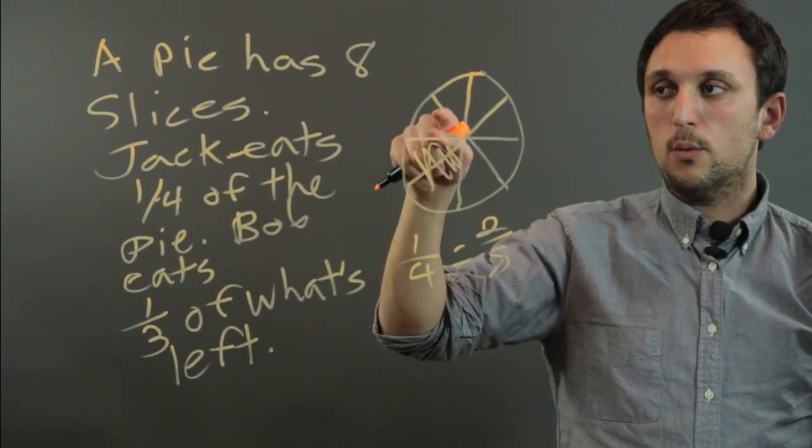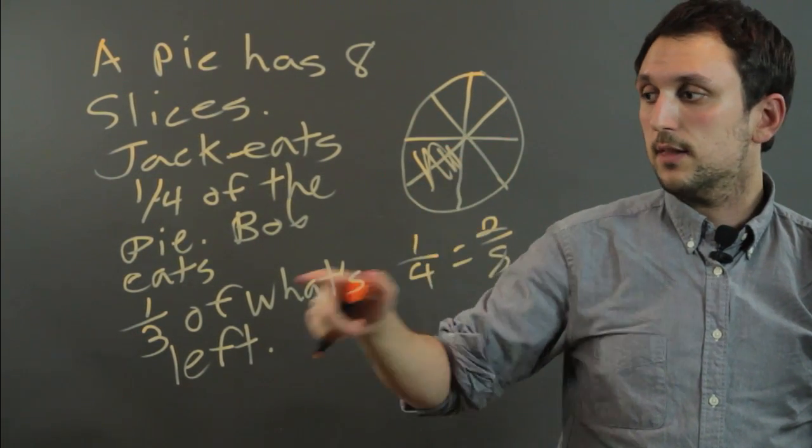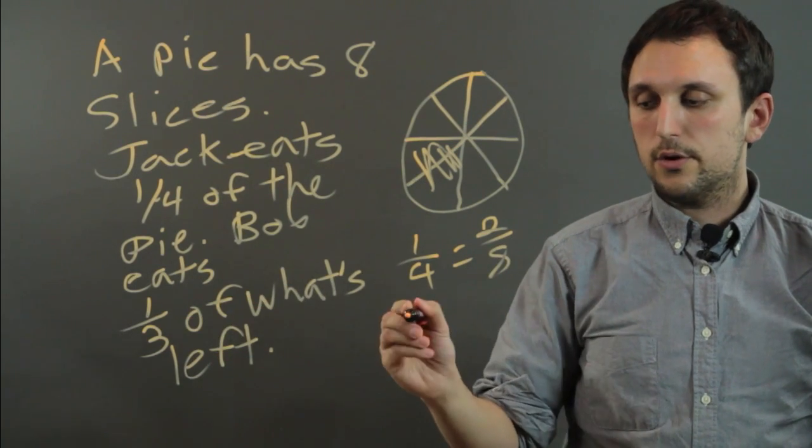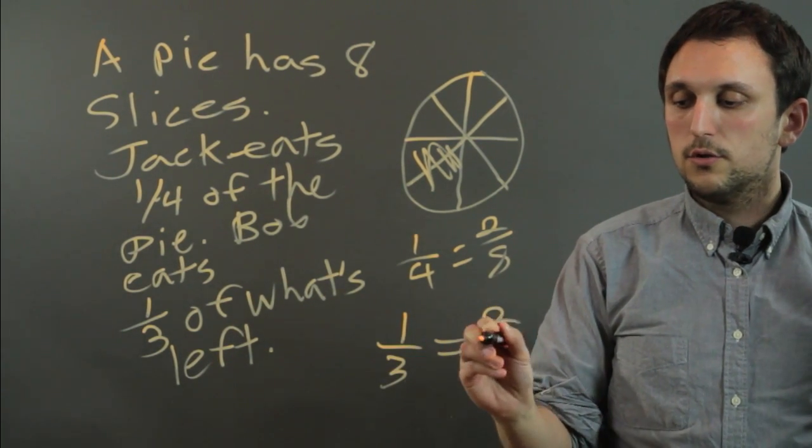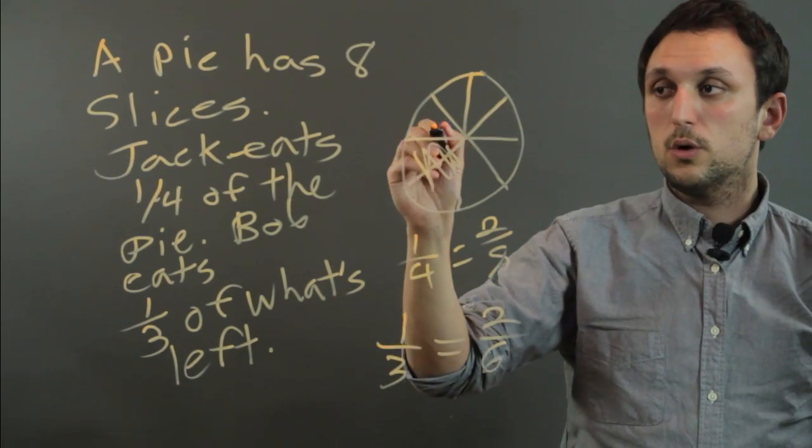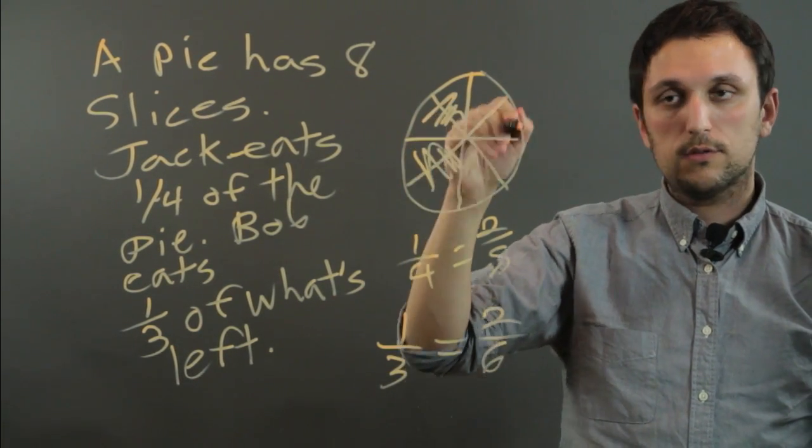And then there's now 1, 2, 3, 4, 5, 6 left. And Bob is going to eat 1 third. So 1 third equals 2 sixths. So Bob eats 2 out of the 6.